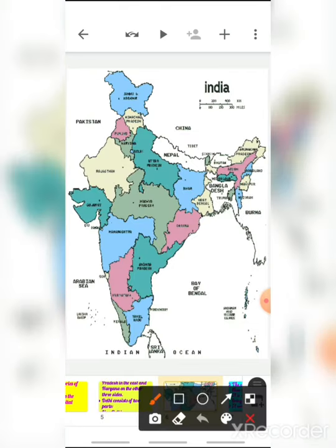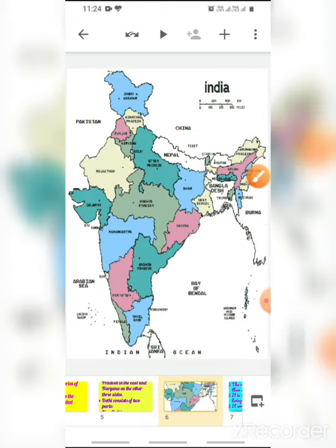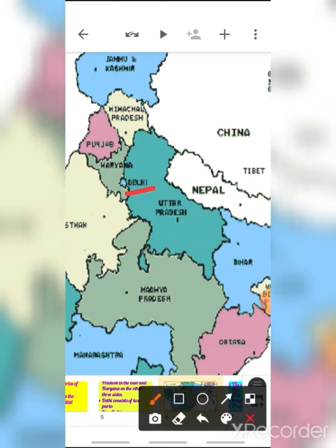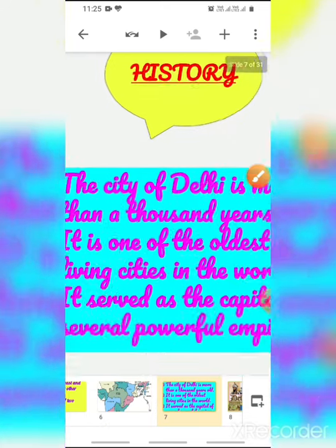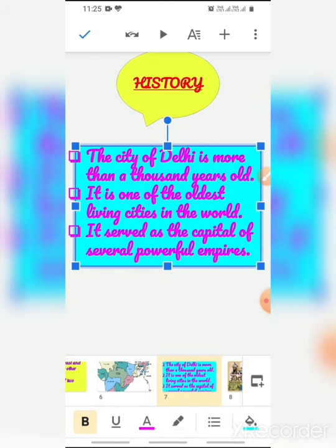This is the map of India. Here you can see Delhi — in the east it is bordered by Uttar Pradesh and on the other three sides it is bordered by Haryana.